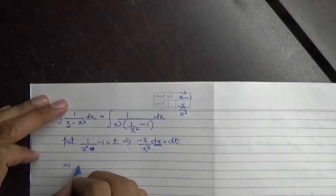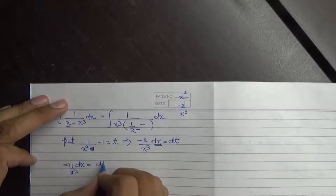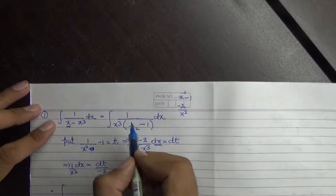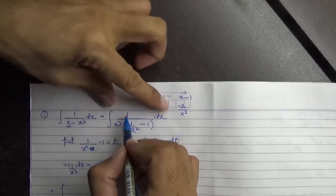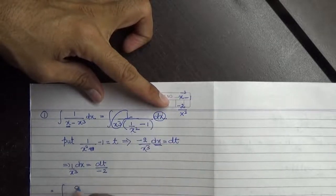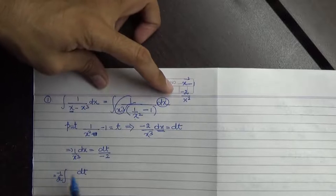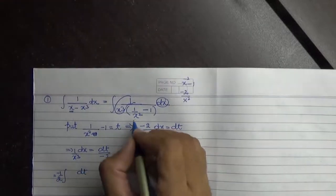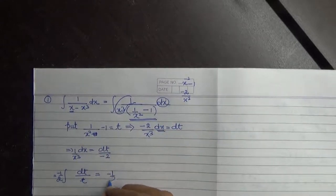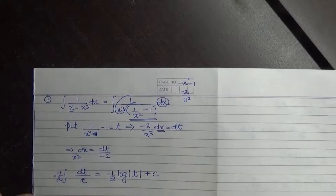dx की value find करते हैं: 1/x³ dx = dt/(-2). अब integration को देखें: हमने integration में 1/x³ dx को collectively dt/(-2) लिख सकते हैं। minus 2 को denominator से integration के बाहर लिख सकते हैं, और इस part को t put किया था। so it is: (-1/2) integration of 1/t, जिसका integration होता है log|t| + c।